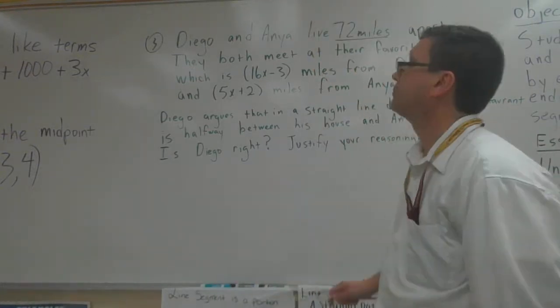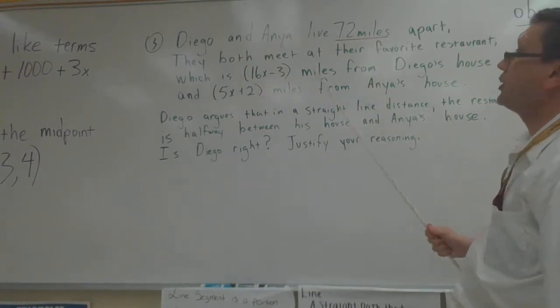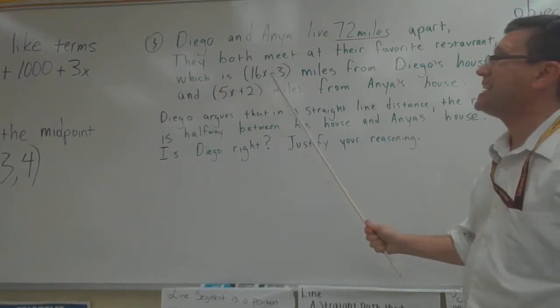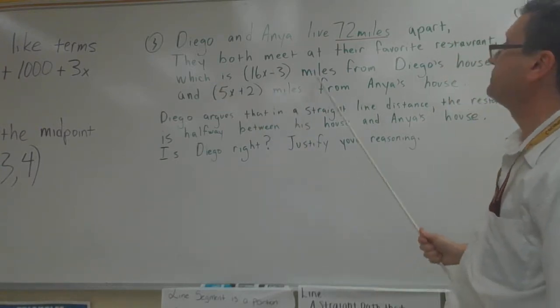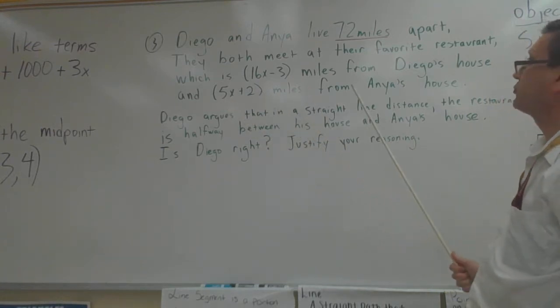Sherwin Geometry here. How are you doing? Diego and Anya live 72 miles apart. They both meet at their favorite restaurant which is 16x minus 3 miles from Diego's house and 5x plus 2 miles from Anya's house.